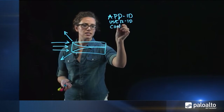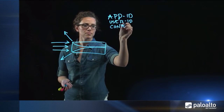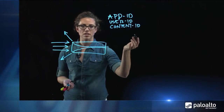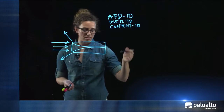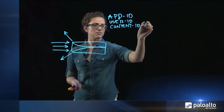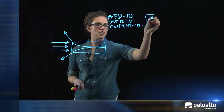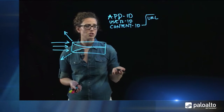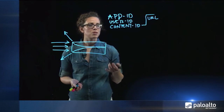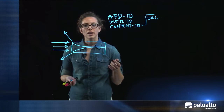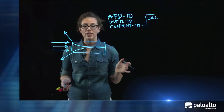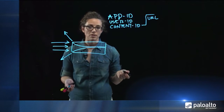And then we have Content ID, which consists of a number of different technologies beneath it. The first is a URL policy, which allows us to reduce the attack surface by permitting access to known good URLs and disallowing access to known bad URLs through the use of our malware category.